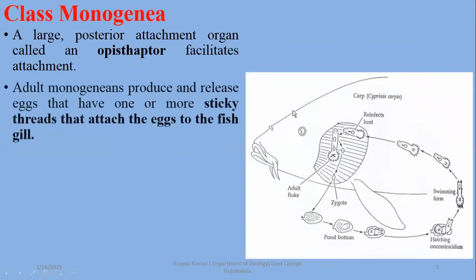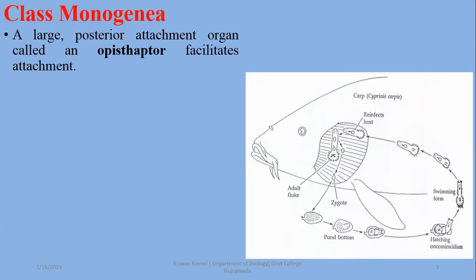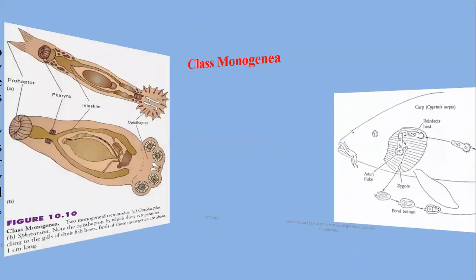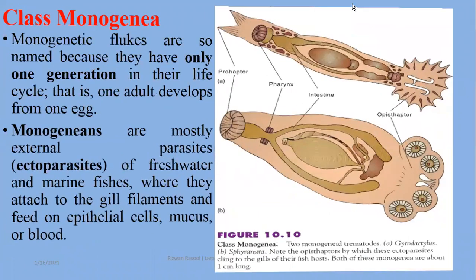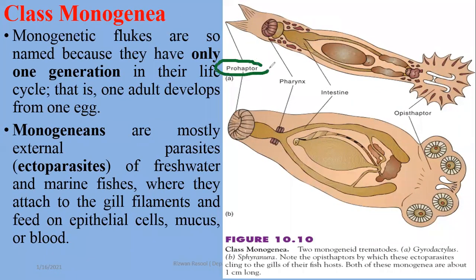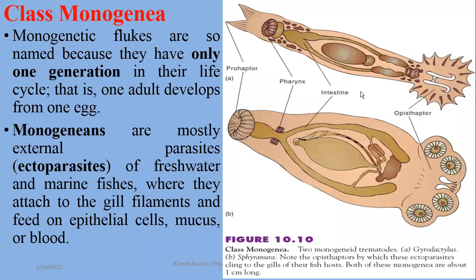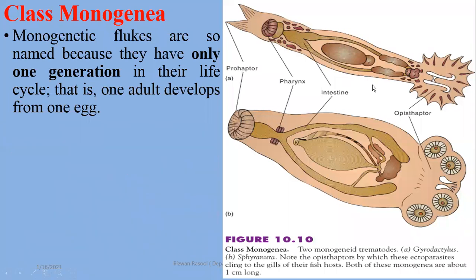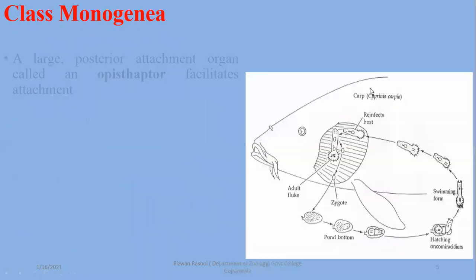In some cases, a large posterior attachment organ is called the Opisthaptor, which facilitates attachment — you can see it here. The anterior structure and attachment structure is the Prohaptor. The Opisthaptor helps these organisms attach to the gills.